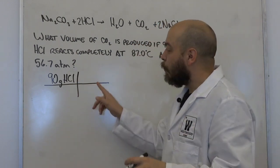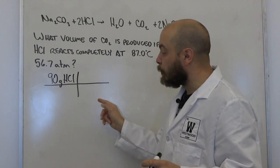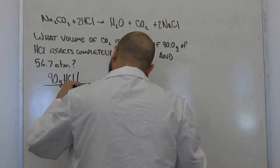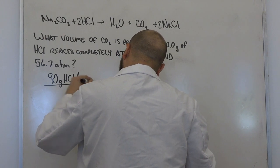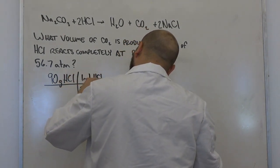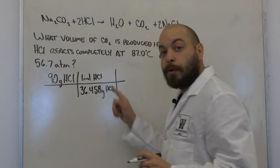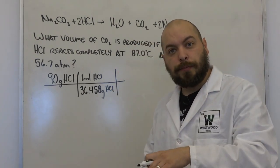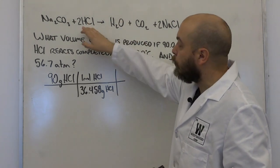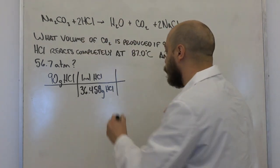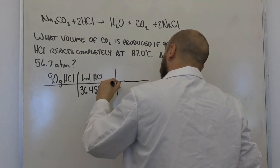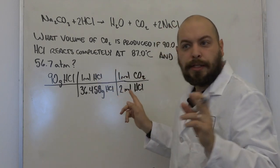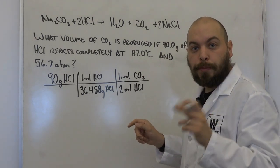Remembering back to stoichiometry: we go from grams of hydrochloric acid to moles of HCl first, using its molar mass of 36.458 g/mol. Now that we're in moles of hydrochloric acid, we convert to moles of carbon dioxide using the mole ratio — one mole of CO₂ for every two moles of HCl. This gives us a value of 1.23 moles of carbon dioxide produced.